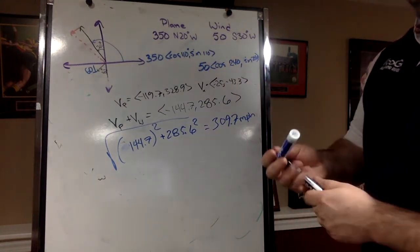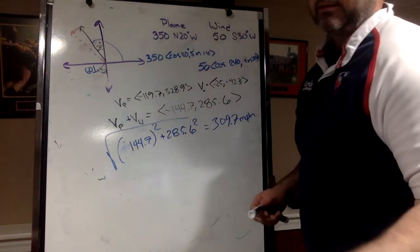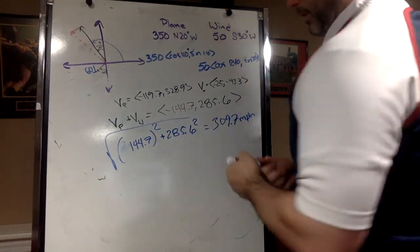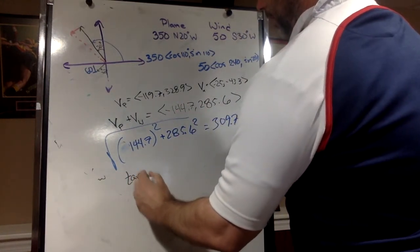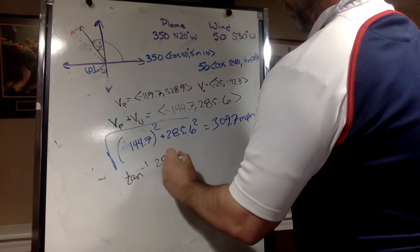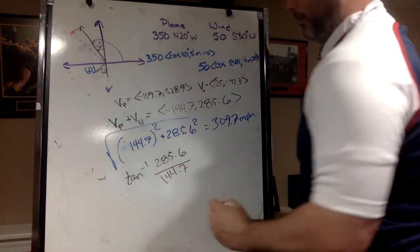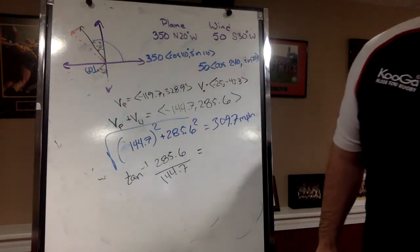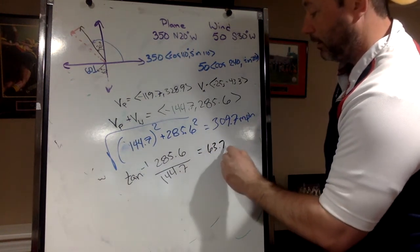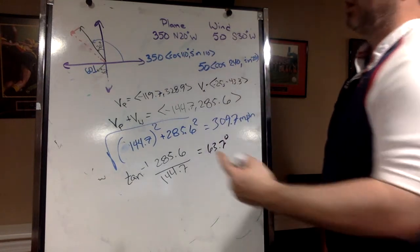Okay, now how do I find my direction? And this is important - this is one of my rules, it's not a real rule. I'm not going to use the negatives on this because I'm going to use my brain. I'm going to do the inverse tan y over x, so that's 285.6 over 144.7, and that gives me 63.7 degrees. And if you do the negative it gives you negative.